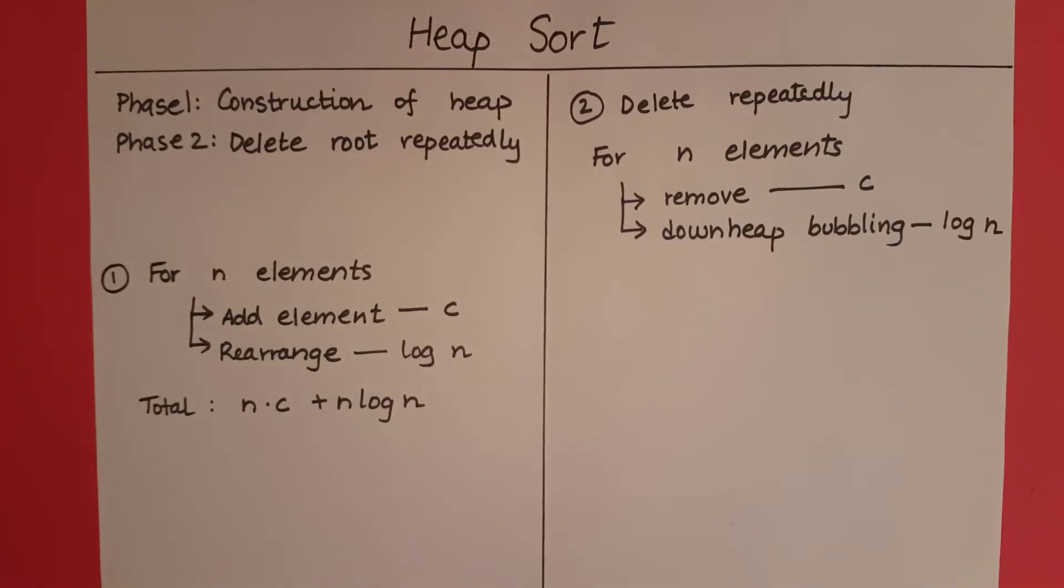How is it log n in the worst case? In the worst case we are going to swap the element which is initially at the root all the way till it is at a leaf node. So how many swaps are taking place? The number of swaps that are taking place is equal to the number of levels in the tree, which is log n.